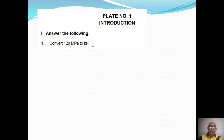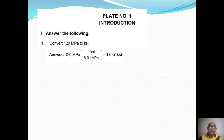Convert 120 megapascal to KSI. To solve the problem, we will multiply the given 120 MPa by the conversion factor: 1 KSI is equal to 6.91 MPa. So 120 MPa multiplied by 1 KSI per 6.91 MPa — the megapascals cancel out — and the result is 17.37 KSI.